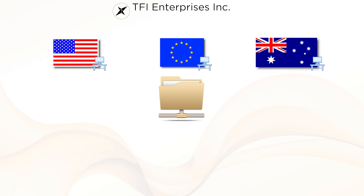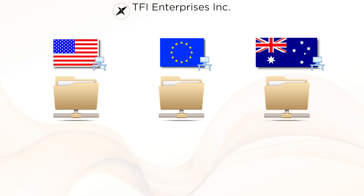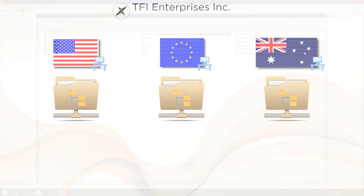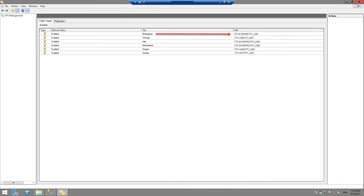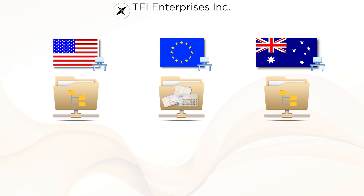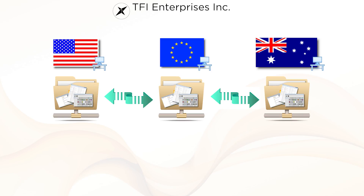Basically, you make a shared folder on a server at every site, with subfolders if you want — ideal for sharing lots of stuff. Then you tell DFS which folders you've created. You put the content into one of the shared folders and enable DFS replication. DFS then sends everything to each of the shared folders, giving you an identical, replicated, synchronized, mirrored folder at every site.